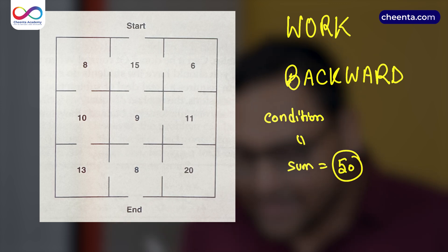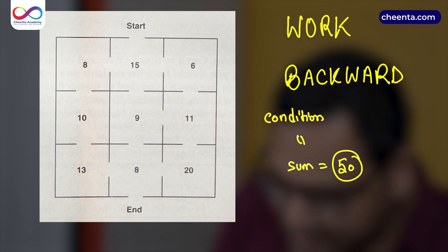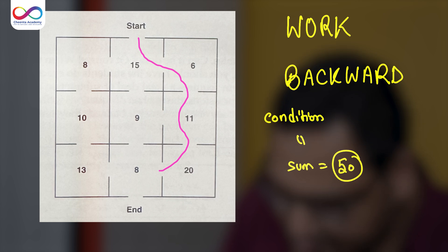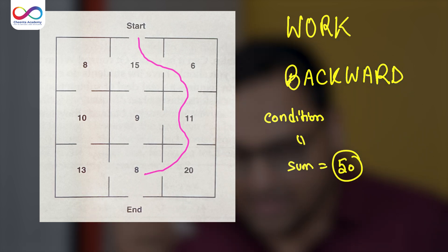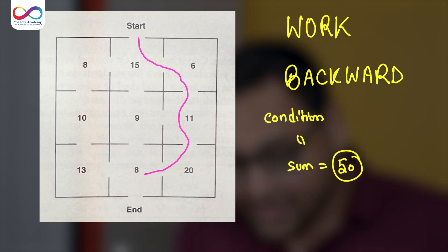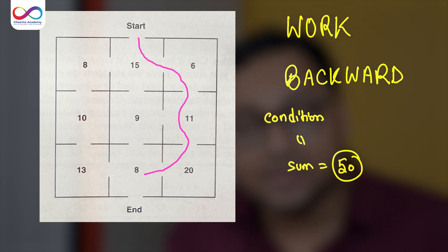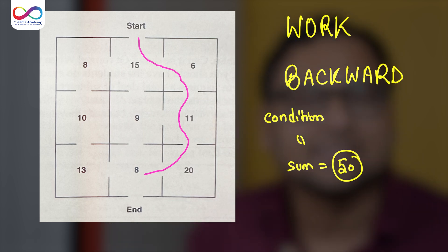Let's say if you go like this: 15, 6, 11, 20, 8. This particular sum is 15 plus 6 is 21 plus 11 is 32 plus 20 is 52 and plus 8 is 60. So this particular path will not work. You have to find a path for which the sum of the numbers is 50.